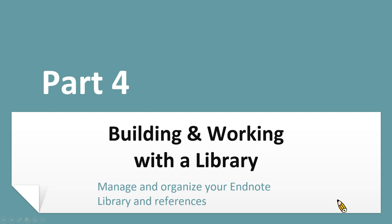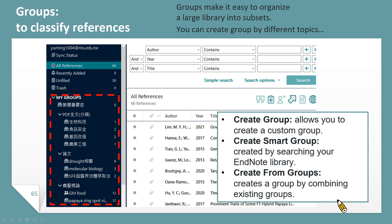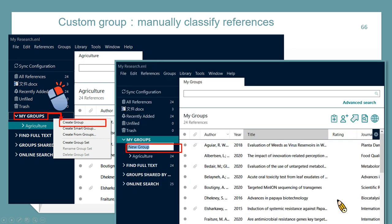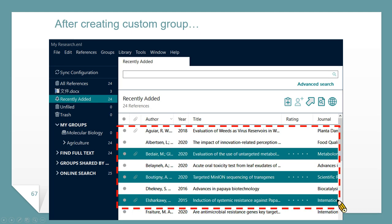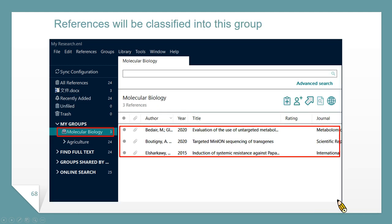After collecting many references in your EndNote library, I will introduce some useful management functions. The first function is Groups, which is used to classify references. A group makes it easy to organize a large library into subsets — you can create groups by different topics. There are three kinds of groups. The first is Custom Group, used to manually classify references. To create a custom group, right-click on My Groups and choose Create Group, then give it a group name. After creating the group, you can select existing references and drag them into the group.